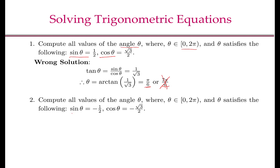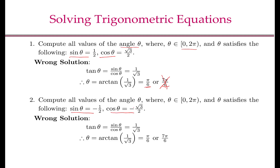Now I have given sin theta as minus half and cos theta as minus root 3 by 2. Again, if I follow the previous procedure, I get tan theta equals to 1 by square root of 3, which is the same as before. Now here, you can again put it in your calculator and get theta equal to pi by 6. And you may again say that since tan is also positive in the third quadrant, another solution that I get is theta is 7 pi by 6. However, here the solution pi by 6 is wrong. The solution 7 pi by 6 is correct.